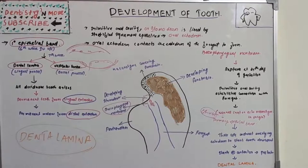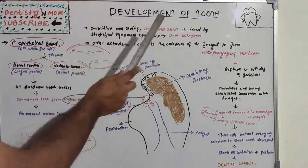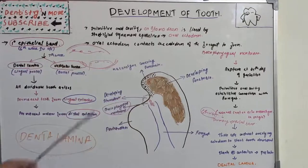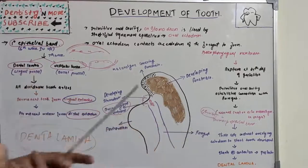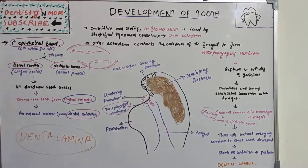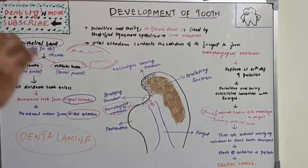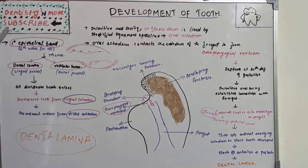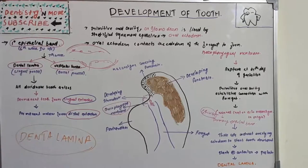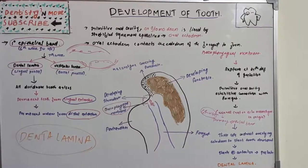The dental lamina is the most important structure giving rise to the future tooth. To summarize: the stomodium connects with the foregut via the buccopharyngeal membrane, which ruptures at the 27th day. After 2 to 3 weeks, neural crest ectomesenchyme proliferates to form the primary epithelial band, which invades the horseshoe-shaped upper and lower arches. It has two processes — the lingual process (dental lamina) gives rise to deciduous teeth, its lingual extension gives rise to permanent teeth, and the distal extension gives rise to permanent molars.